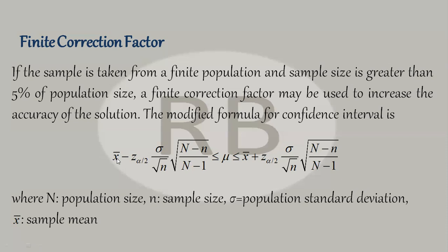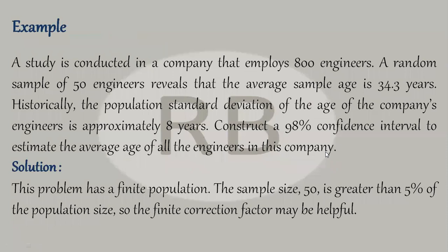And the sample size should either be greater than 30, or we should know that the population is normally distributed. We use this formula when, for example, a study is conducted in a company that employs 800 engineers. A random sample of 50 engineers reveals that the average sample age is 34.3 years.